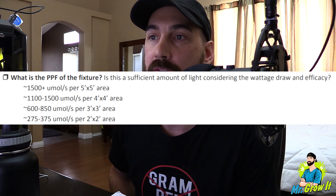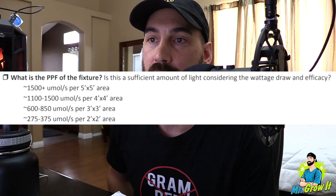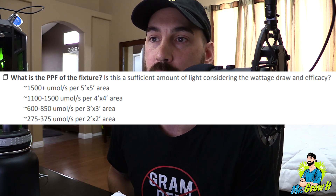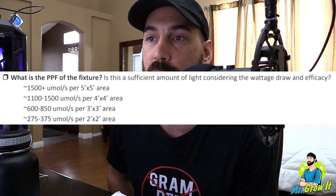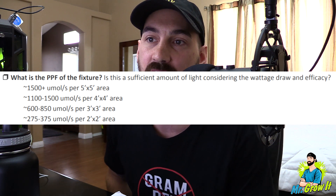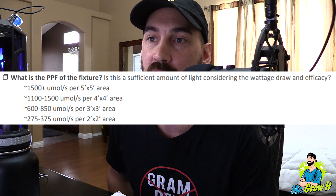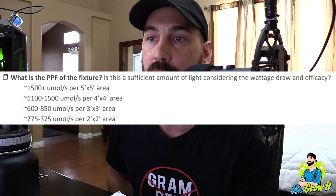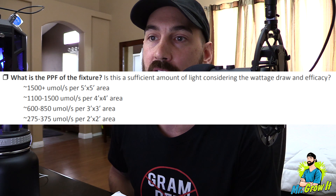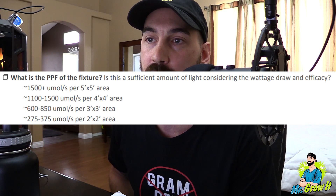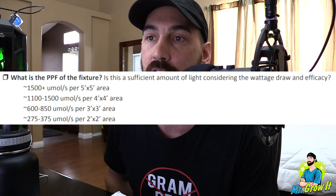For a five foot by five foot area, around 1,500 micromoles per second PPF is sufficient. For a four foot by four foot area, around 1,100 to 1,500 micromoles per second. For a three foot by three foot area, around 600 to 850 micromoles per second. And for a two foot by two foot area, around 275 to 375 micromoles per second PPF. These numbers are just a general guideline.